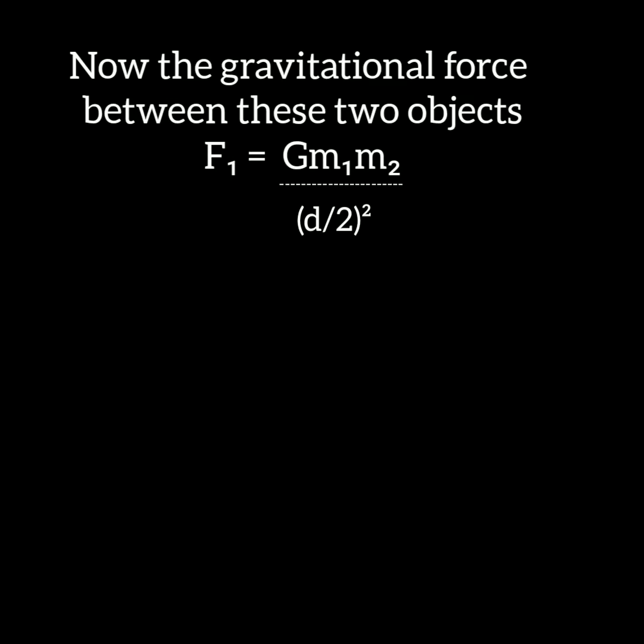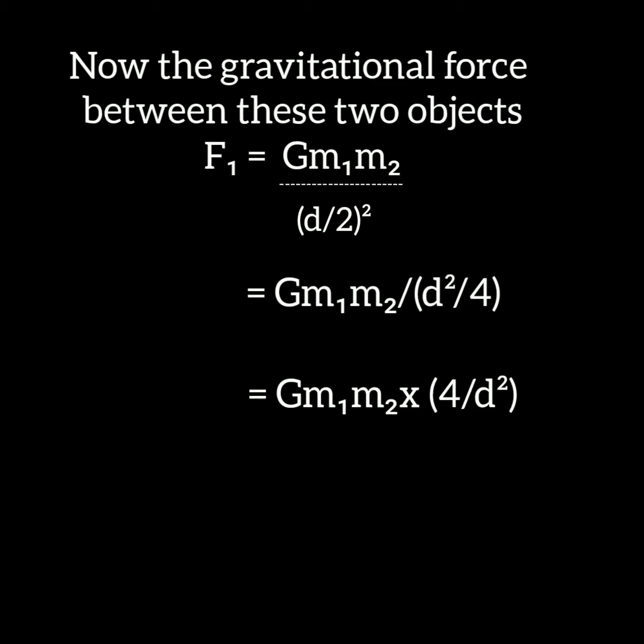So G M1 M2 divided by (D by 2) squared equals G M1 M2 divided by D square by 4. That equals G M1 M2 into 4 divided by D square, because the fractional division multiplies with the reciprocal. So F1 equals 4 G M1 M2 divided by D square. Put it as equation number 2.